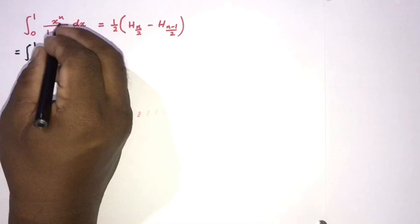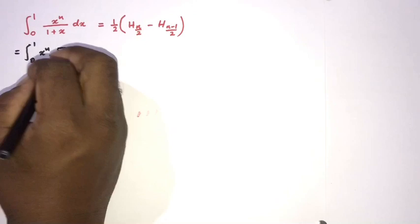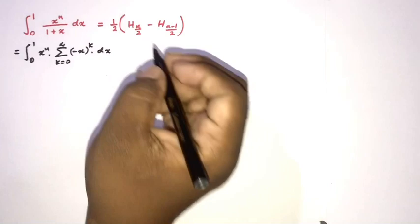Our integral is the integral from 0 to 1 of x to the n times 1 over (1 plus x). We use the series representation: 1 over (1 plus x) equals the sum from k equals 0 to infinity of minus x to the k.